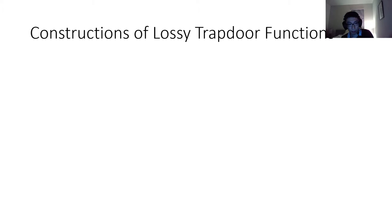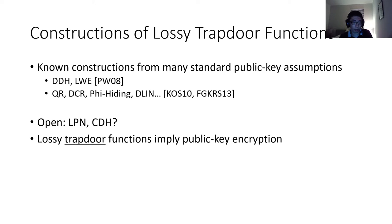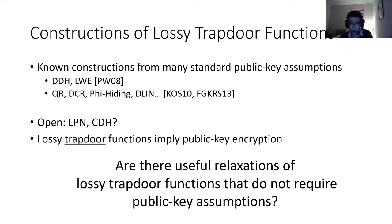That's extremely crucial for applications. Given that lossy trapdoor functions have many applications, the natural question is how do we build them? It turns out we know how to build them from a wide variety of public assumptions — almost all public assumptions you can think of — with some notable counter-examples. It's actually an amazing open problem to build lossy trapdoor functions from either LPN or CDH. And it's not hard to see that lossy trapdoor functions would actually imply public key encryption. So the question we ask is whether we can relax lossy trapdoor functions in a way that allows instantiation from substantially weaker assumptions.